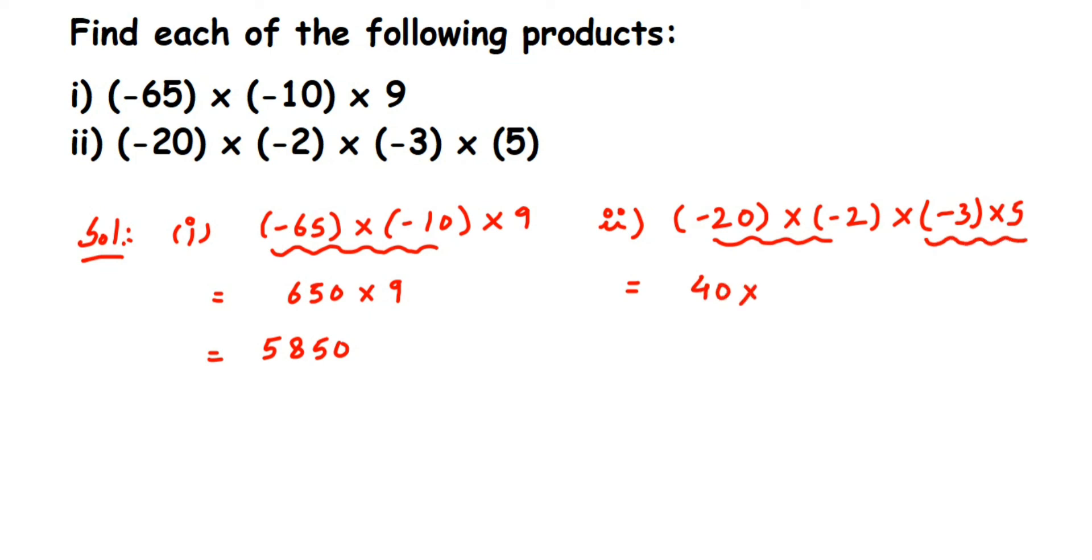So three fives are fifteen. Only one negative sign is there, one is odd so minus. Now 15 into 40 is 600, but again only one negative sign is there and one is odd so we'll get a minus sign here.